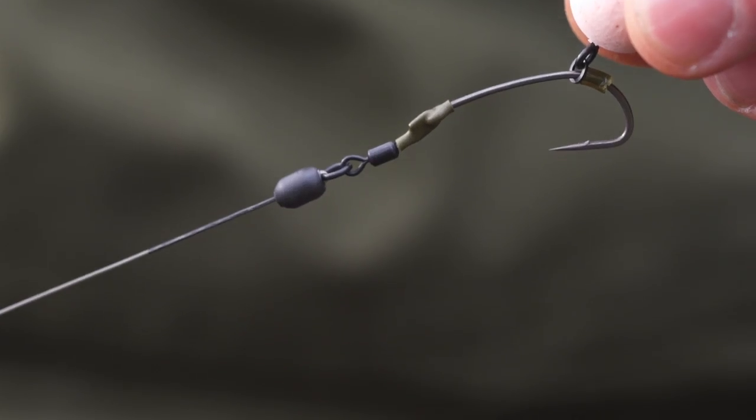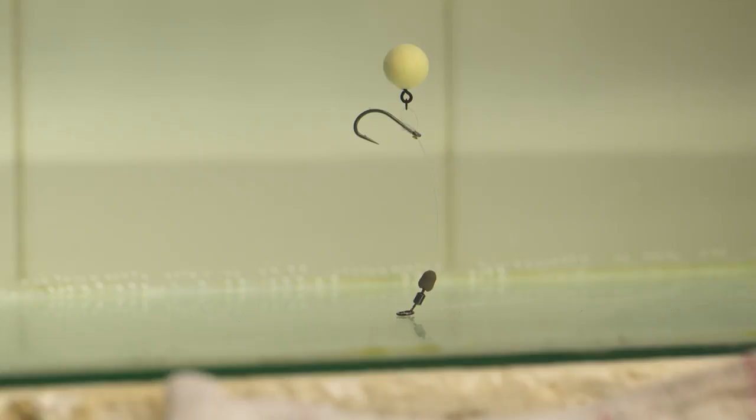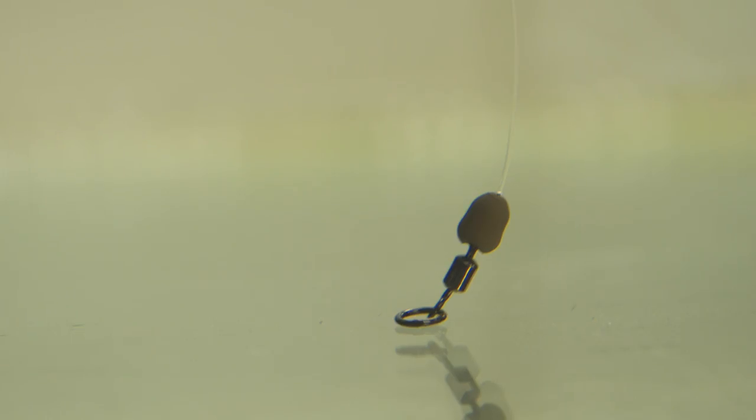On the boom of a Ronnie rig, for example, the bead plugs up against the knot of the ring swivel. On a hinge rig on the hook section, the bead can be jammed down over the eye of the swivel for a nice tight fit.